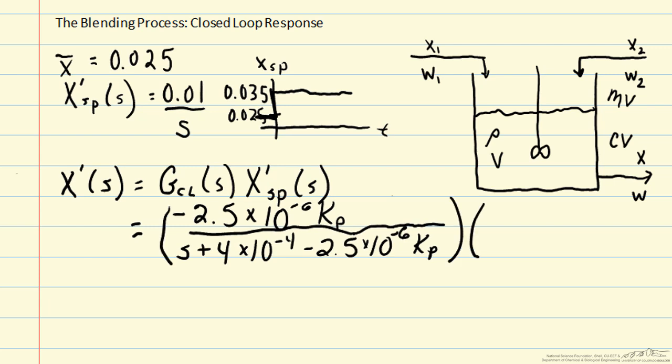For convenience here, and also to get a little bit better intuition, we'll define this variable tau, our time constant. We'll define that as 1 over 4 times 10 to the minus 4 minus 2.5 times 10 to the minus 6 Kp.